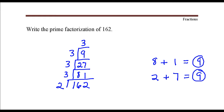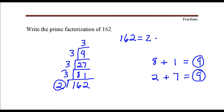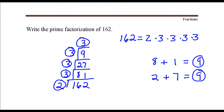9 divided by 3 is 3, and I can stop here because 3 is a prime number. So the prime factorization of 162 is 2 times 3 times 3 times 3 times 3. Or you can write it as 2 times 3 to the fourth power, because there are 1, 2, 3, 4 factors of 3.